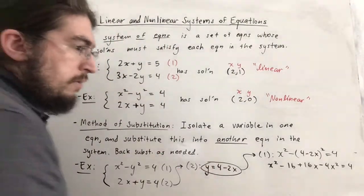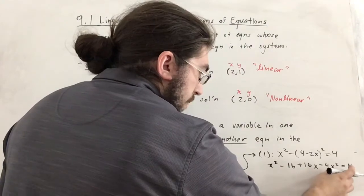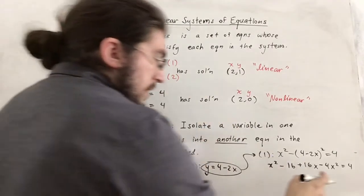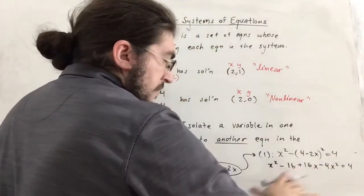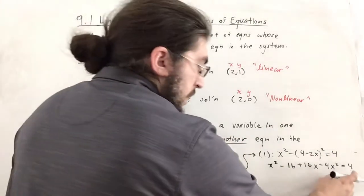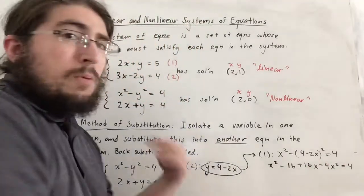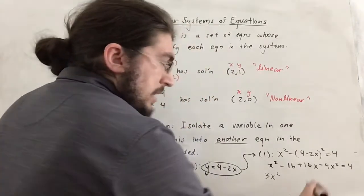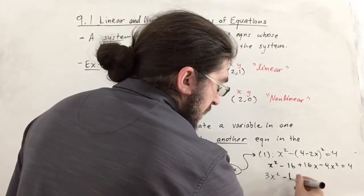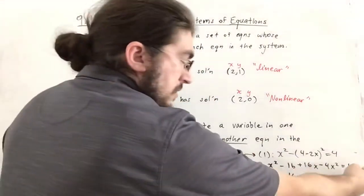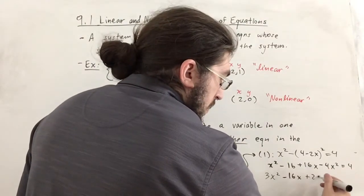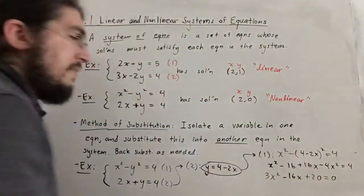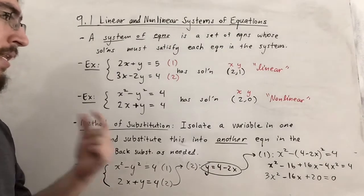After combining terms and moving things around, we want the x² coefficient positive. The x squared terms combine to negative 3x², moving to the other side gives positive 3x². The x term is 16x, moved gives negative 16x. The constant negative 16 moved gives positive 20. So we get 3x² − 16x + 20 = 0.